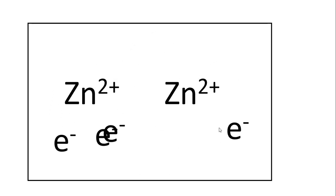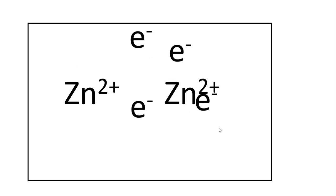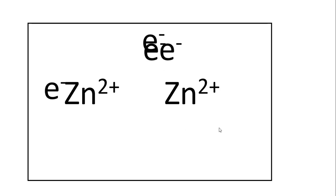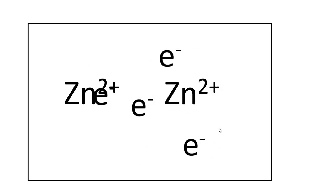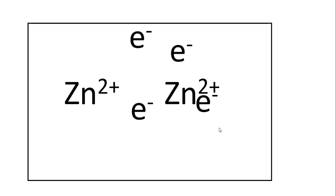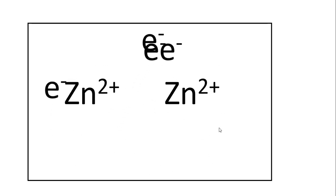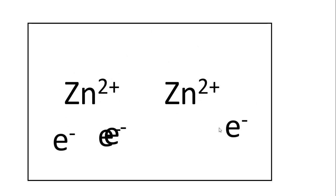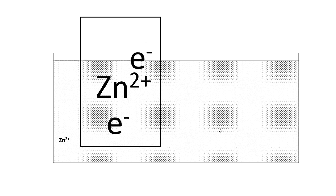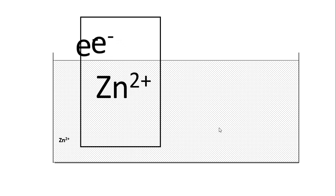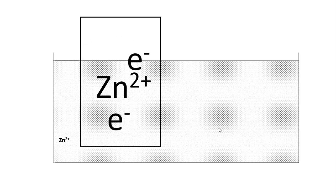Twenty valence electrons are common to ten zinc ions. If we consider one hundred zinc atoms, two hundred valence electrons are common to those hundred zinc ions; with a thousand zinc atoms, two thousand valence electrons keep moving about. This is the theory of metallic bonding. Assuming the zinc rod is dipped in a Zn²⁺ solution, one zinc atom is represented as one zinc ion plus two mobile valence electrons.